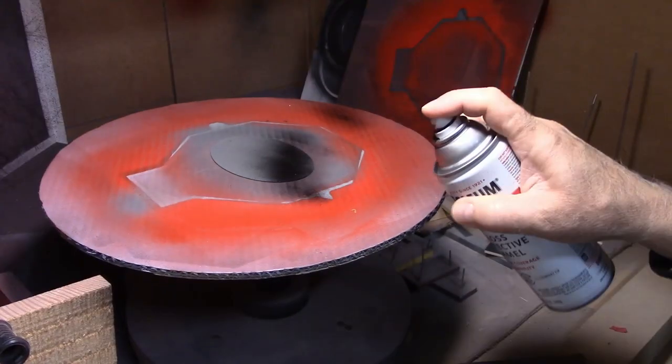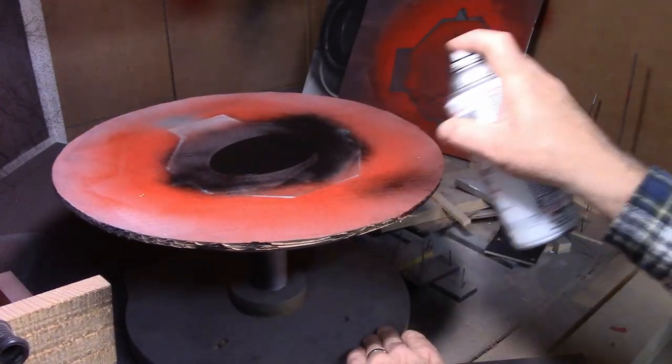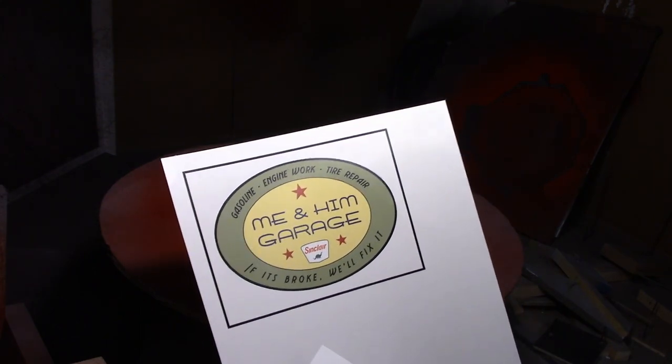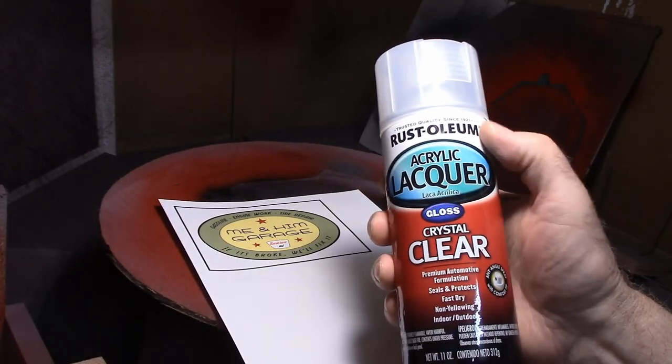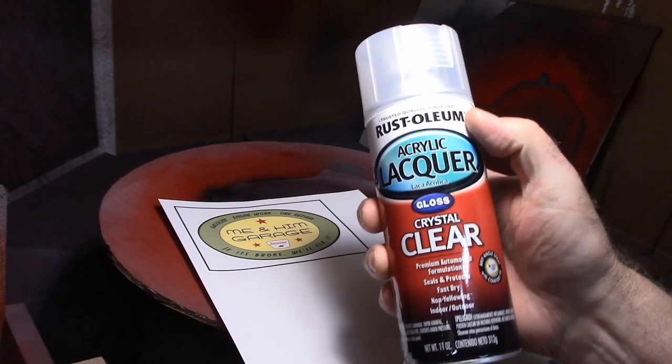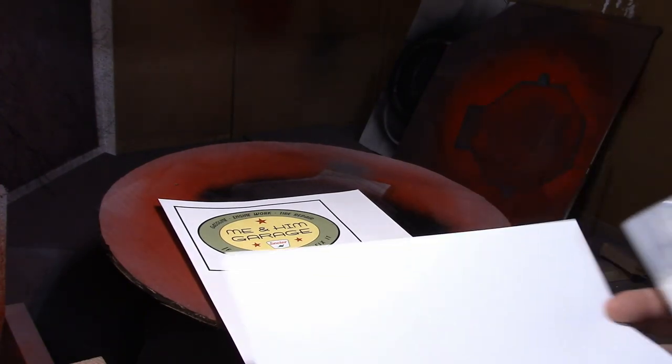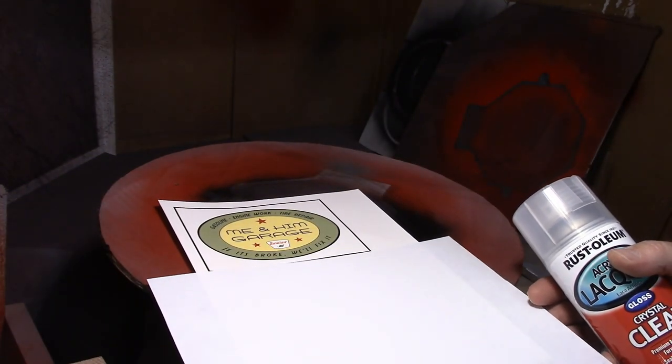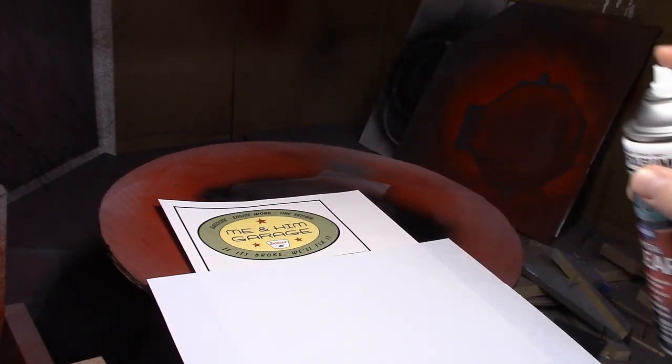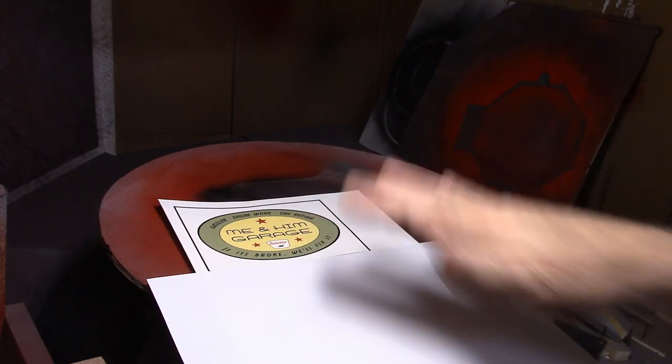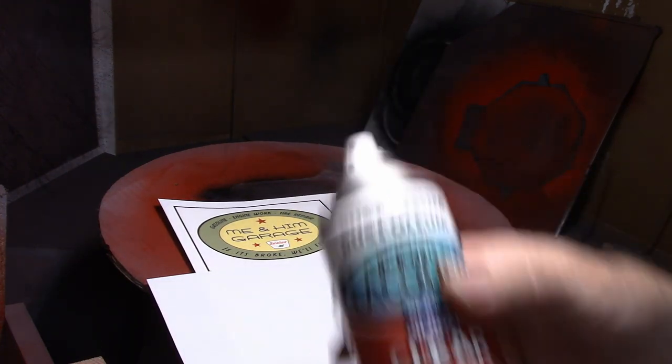I've printed the decal onto the decal paper with an inkjet printer, and so now I have to fix it with some clear lacquer. This is acrylic crystal clear Rust-Oleum lacquer. This decal paper's kind of pricey so I'm going to reuse this bottom part, so I'm going to cover this because I don't want to get this on there. I'm just going to give this a spray. You want to be sure that you get a good even coat on here because that's all that's holding this together when you go to put it in the water to slip it off.